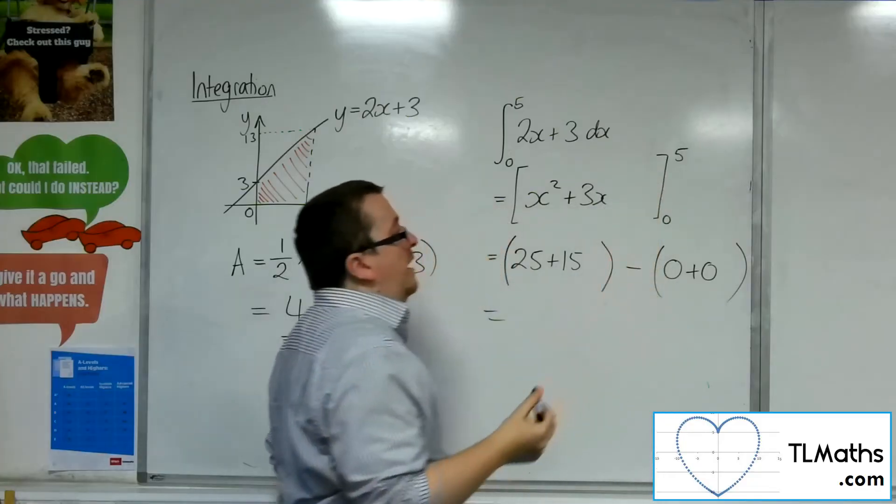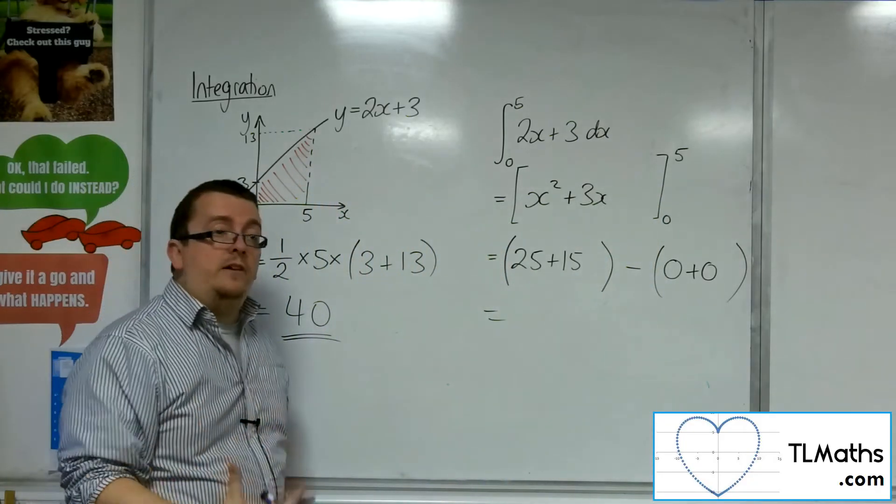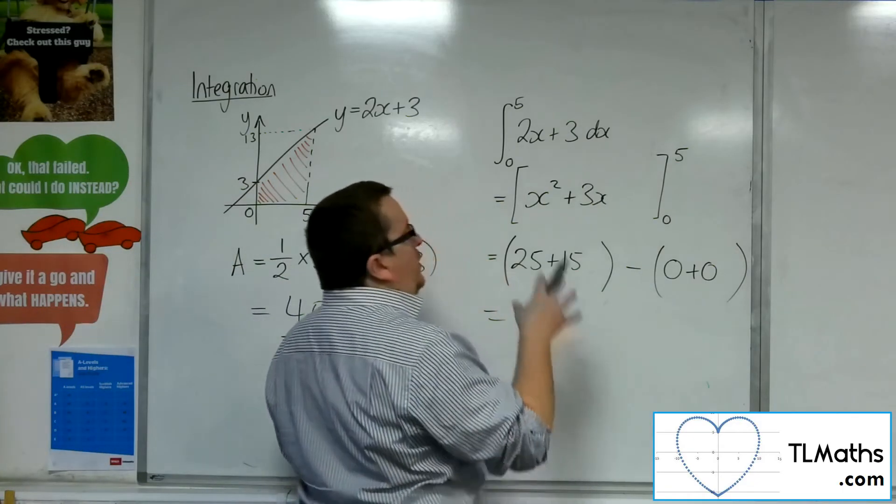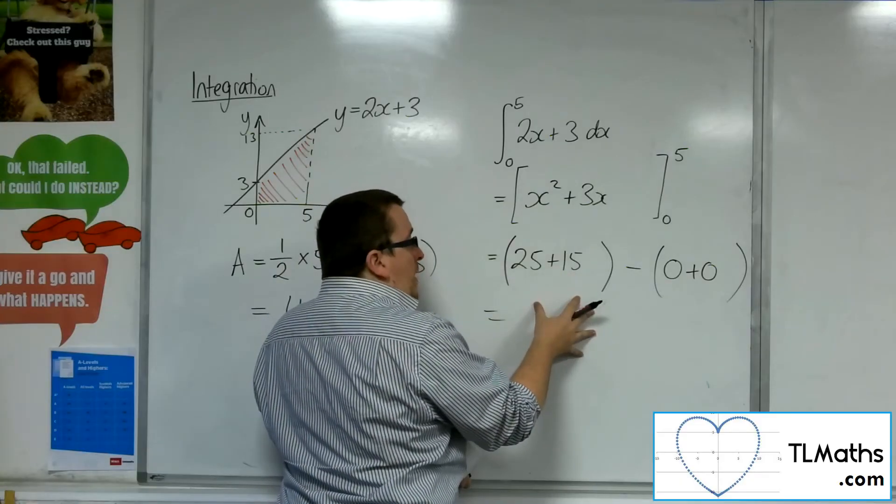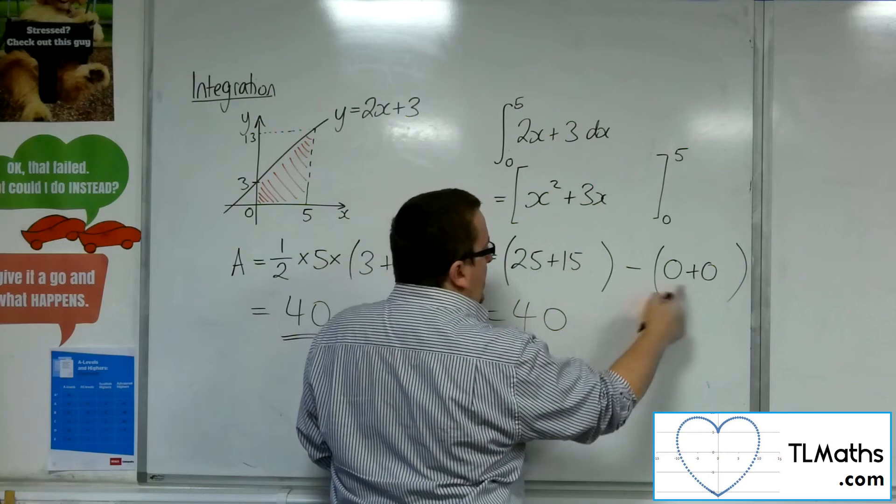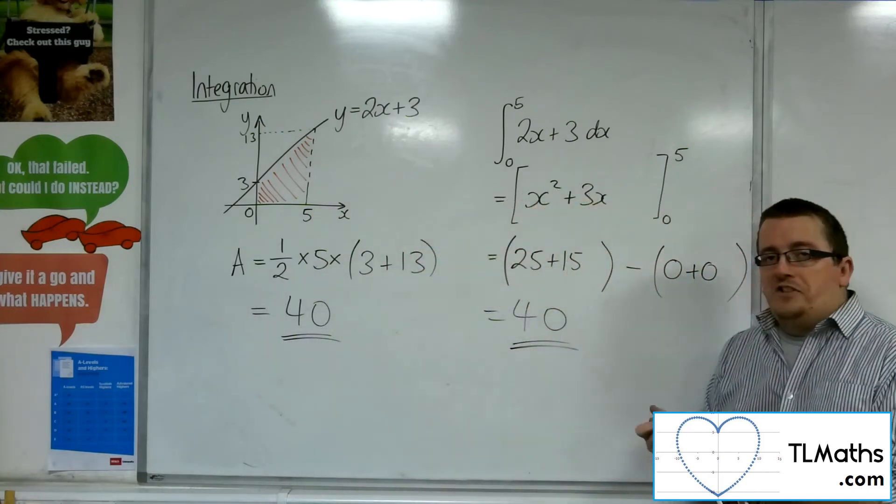So when we are finding the area under a curve, or a line in this case, we can ignore the constant of integration. Which gets us to this stage here, 25 plus 15 is 40, take away 0. And you can see we get to precisely the same answer.